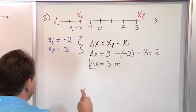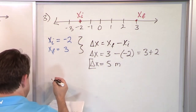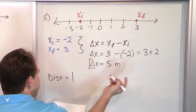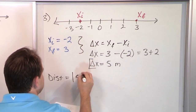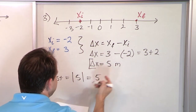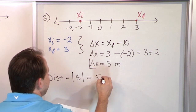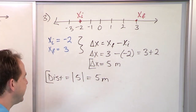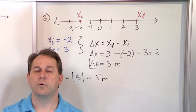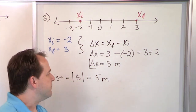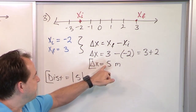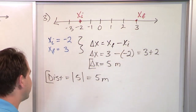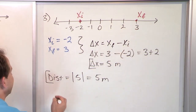The distance traveled is the absolute value of the displacement. It's trivial here because when you throw away the sign you get the same thing back: five meters. So in this case, just like the first example, the distance and the displacement are the same numeric value — but the positive sign carries more information because it tells me which direction I was walking.